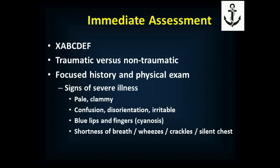In any patient with chest pain, you do your usual assessment: control of exsanguinating hemorrhage, airway, breathing, circulation, disability, expose them and protect them from the environment. It's very important to differentiate between traumatic versus non-traumatic causes of chest pain, because both the diseases that occur and their treatments vary widely between those two general categories. Then you perform a focused history and physical exam based on the cause, traumatic versus non-traumatic.